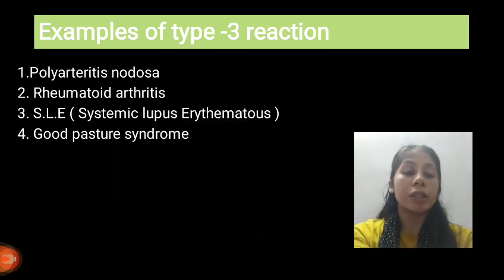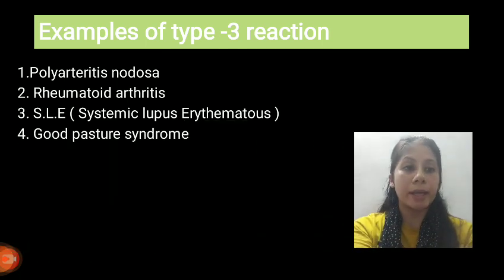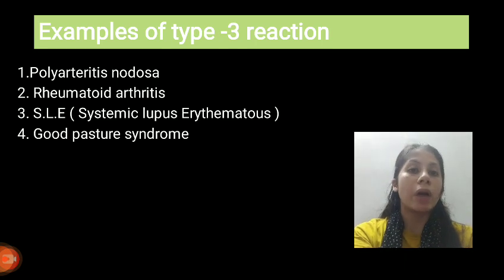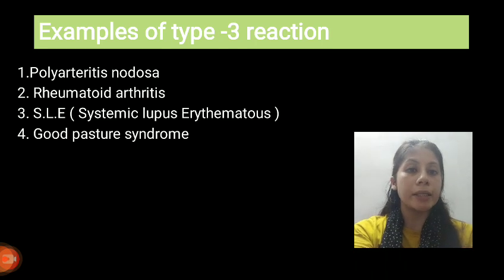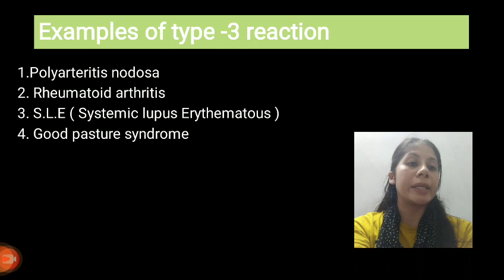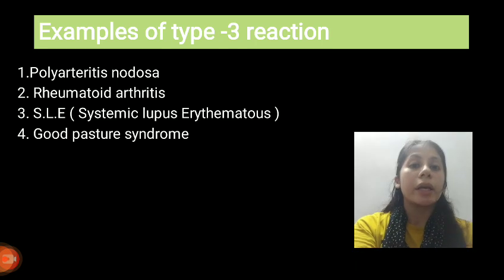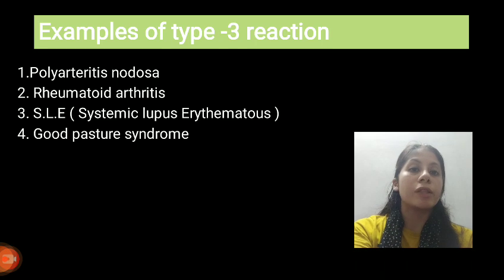Examples of Type 3 Reaction include polyarteritis nodosa, rheumatoid arthritis, systemic lupus erythematosus, and Goodpasture syndrome. Goodpasture syndrome is basically found in kidney disorders. These are the examples of Type 3 Reaction.